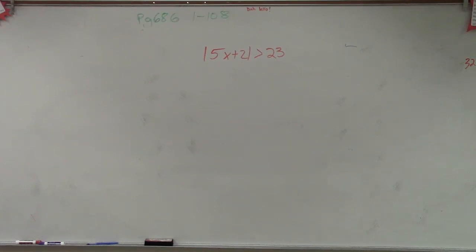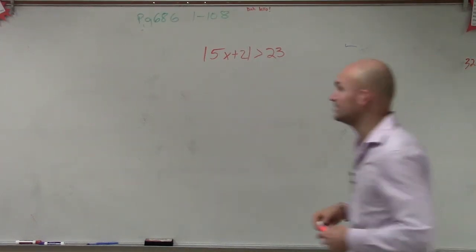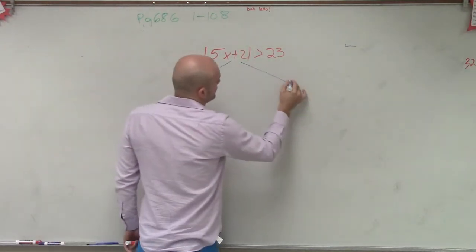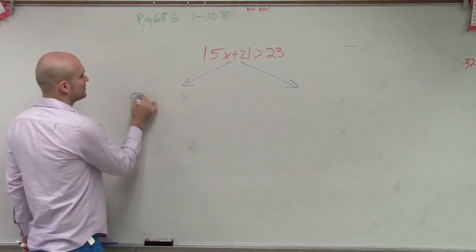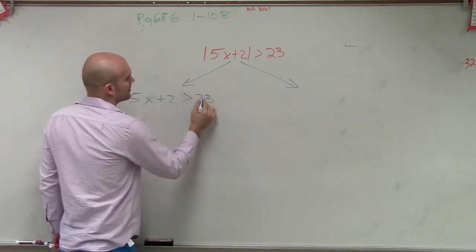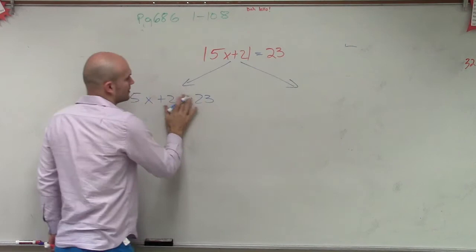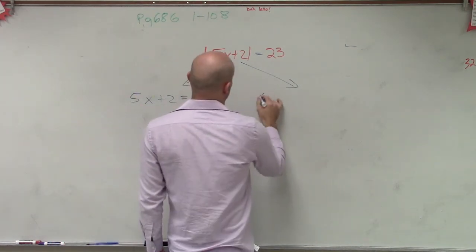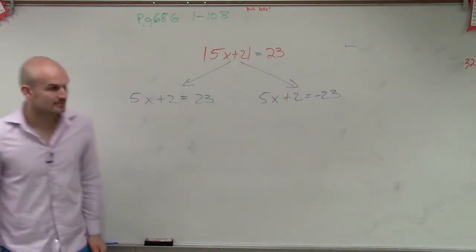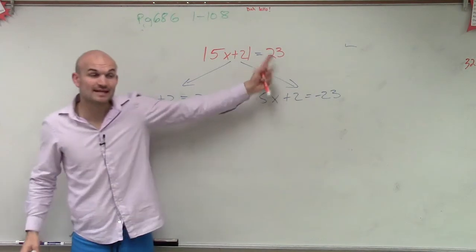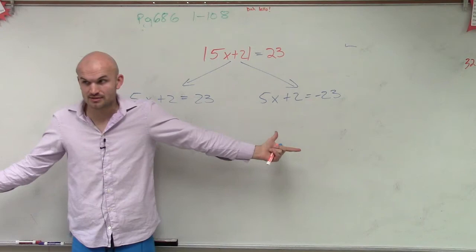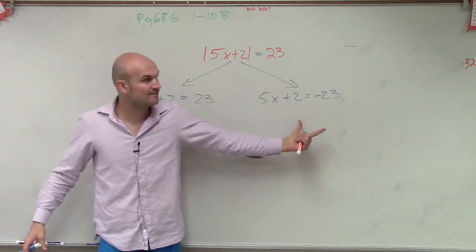We haven't touched on this in a long time. So the first thing we need to remember: every single time we're dealing with an absolute value inequality, there are two cases we're going to be dealing with. We always set it up — for example, 5x plus 2 is going to be greater than 23. Actually, let's pretend it's an equal sign for a moment, because for an equal sign, you need to remember we set up two different possibilities. We do the positive and the negative.